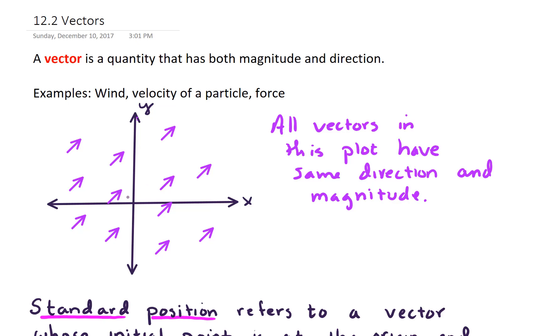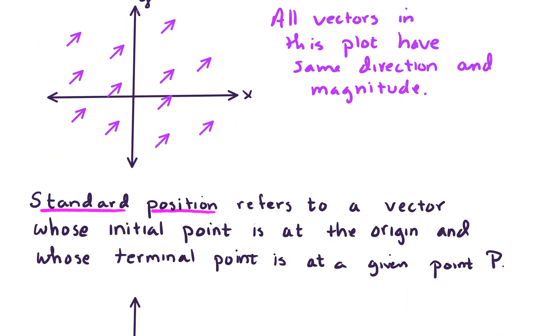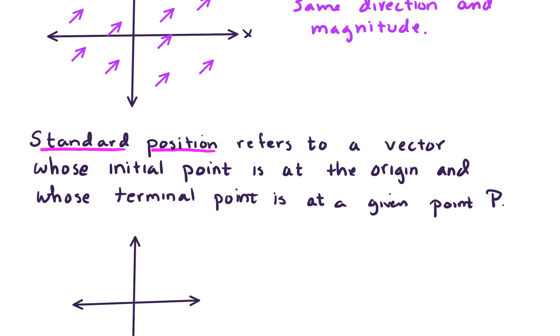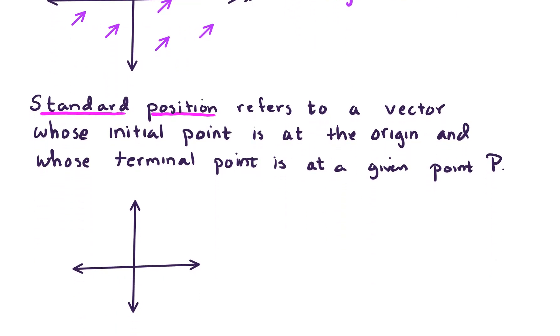To avoid confusion about where a particular vector might lie, we often talk about vectors as being standard position vectors. A vector is in standard position if the vector has its initial point, its starting point at the origin, and the terminal point is given at some point P. Let me show you what I mean by an example. So we're going to start at the origin and we end at some point. This is a standard position vector. I might call this vector v, is a standard position vector.